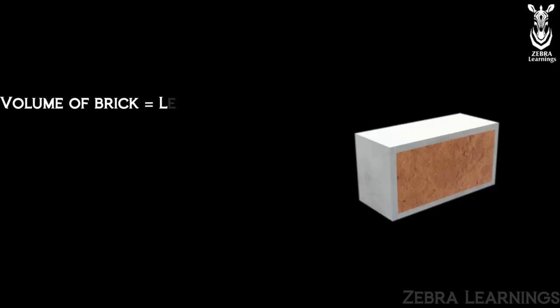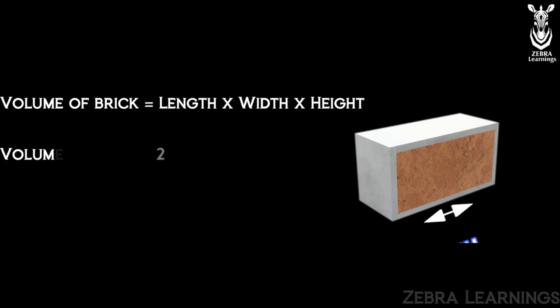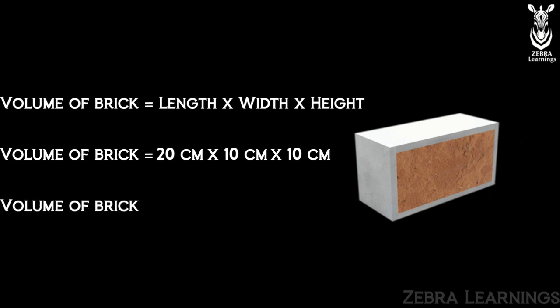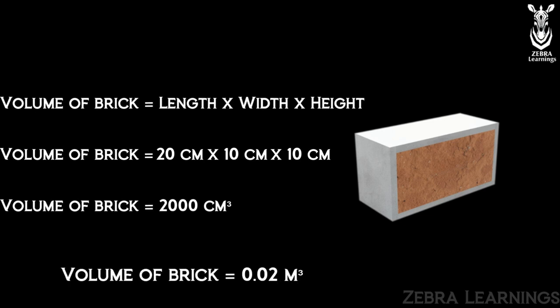Now we can find the volume of the brick along with mortar. Length is 20 cm, width is 10 cm, and height is 10 cm. Multiply these three and we will get the value 2000 cm³. When we convert this to cubic meters, we get 0.002 m³. This is the volume of the brick.